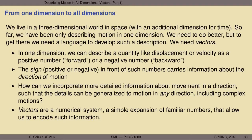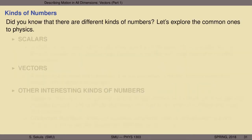Vectors are a numerical system, and they are really a simple expansion of already familiar numbers, but these kinds of numbers allow us to encode information about both length and direction. Did you know that there are different kinds of numbers? The kinds of numbers that are possible in mathematics are not limited only to the ones that we're most familiar with. Let's explore some of the ones that are more common in physics.